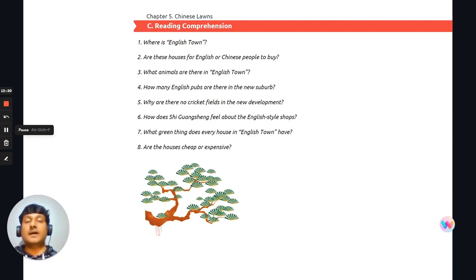Okay. How many English pubs are there in the new suburb? So there are four English style pubs. Moving on to the next question, why are there no cricket fields in the new development? There are no cricket fields because nobody in China can play cricket, unfortunately. How does Xi Guanqiang feel about the English style shops? He feels many people in China want to live in English style housing.